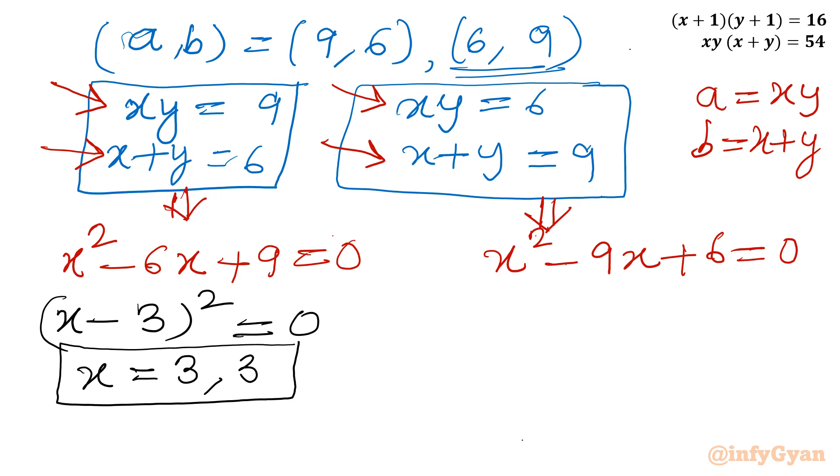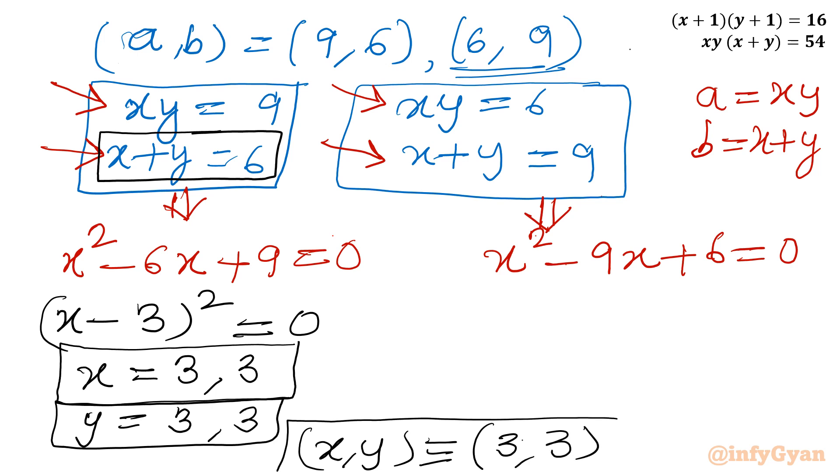Once x is 3, see this equation is x+y equals 6. So y should be 3. This is one answer. Now let us consider the second quadratic equation. This one: x squared minus 9x plus 6 equals 0.